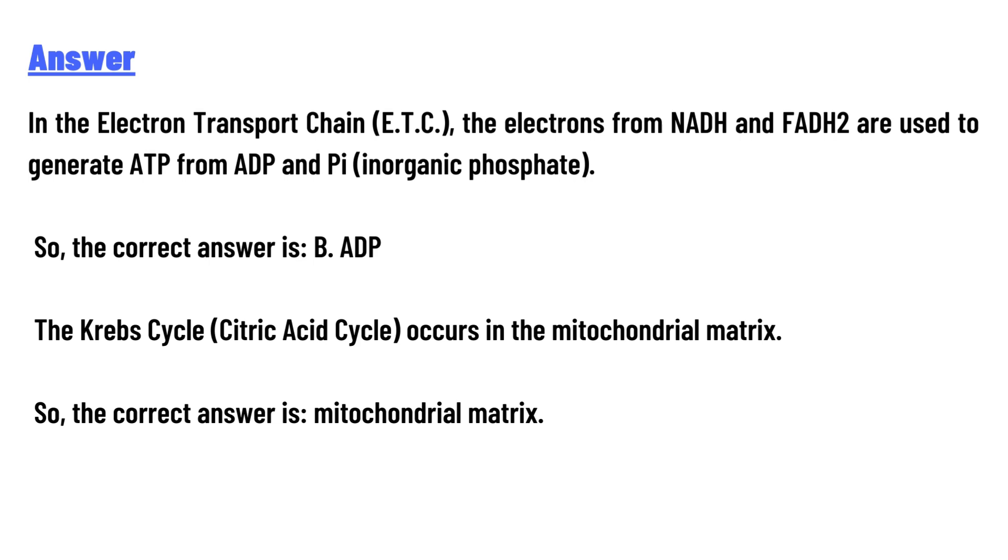correct answer is B. ADP. The Krebs Cycle (Citric Acid Cycle) occurs in the mitochondrial matrix, so the correct answer is mitochondrial